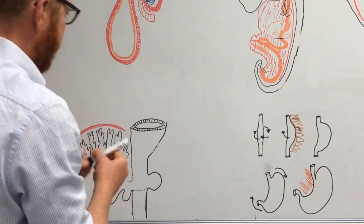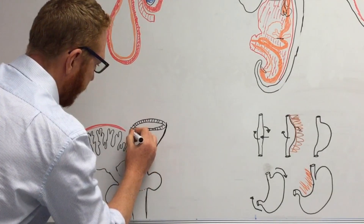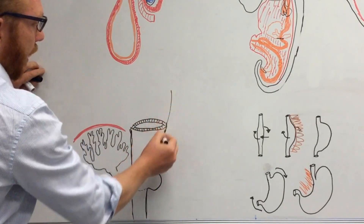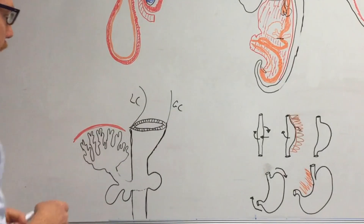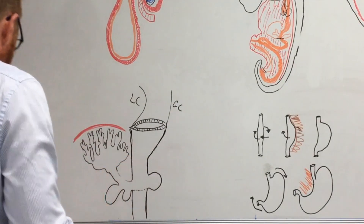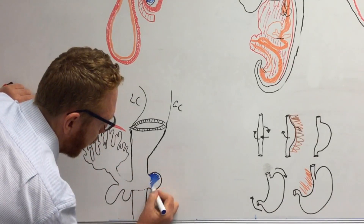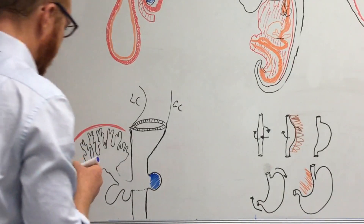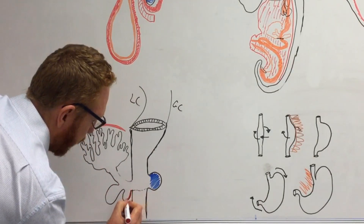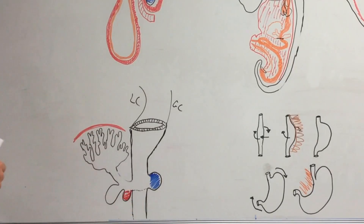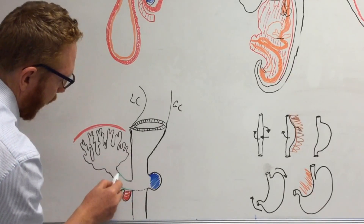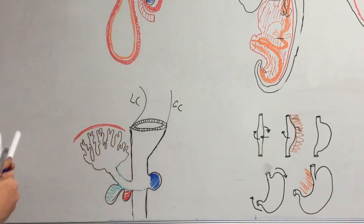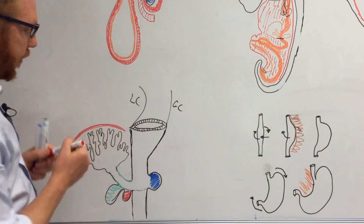Coming off the gut tube are the main diverticula. There is a dorsal pancreas coming off the back wall and a ventral pancreas coming off the other side. There is also a diverticulum going up into the liver. The septum transversum has come from C3–5, gone around the heart developing the fibrous pericardium, and sat underneath the heart — essentially forming the diaphragm. The liver grows up into the septum transversum beginning around the fourth week.